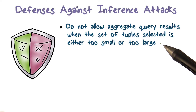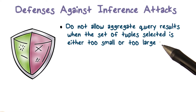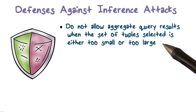If it's a small number of tuples, the average is going to be close to the score of every person whose tuples are selected. So the average for a small set essentially tells us what those values are. We don't want to run an average query when the number of tuples is too small.